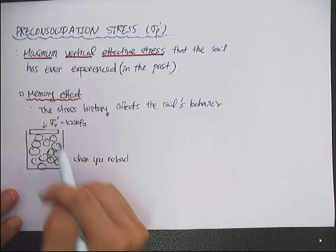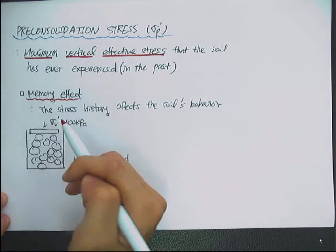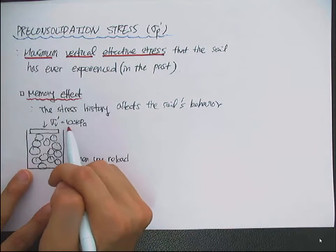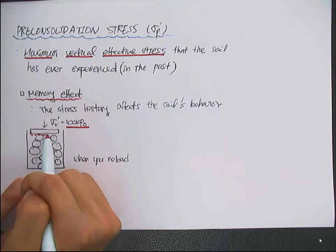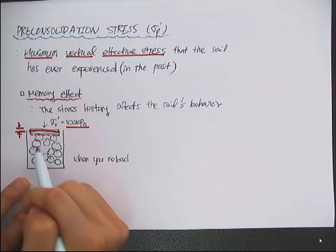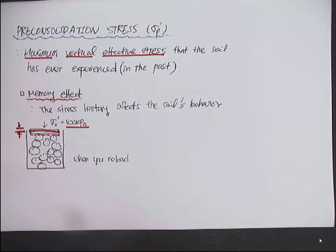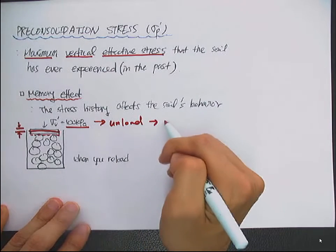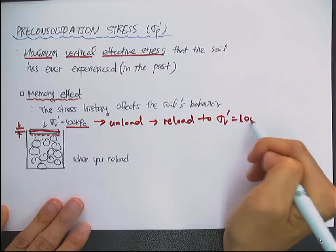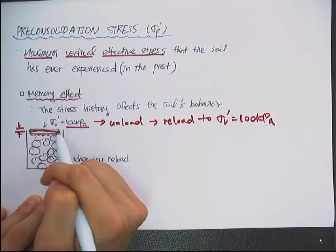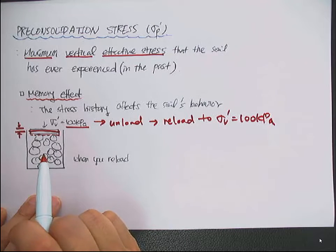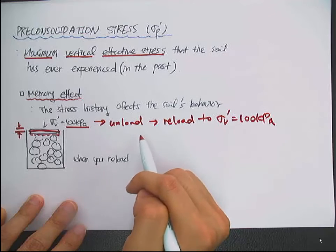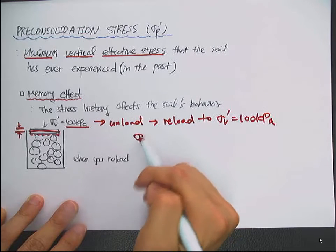For example, let's say we pour soil in a container — the soil has never experienced any stress. Then we apply a vertical effective stress of 100 kPa. The soil will settle and deform, and now the soil has experienced 100 kPa. You then unload it. When you reload to 100 kPa, the settlement will occur the same amount. In this case, the maximum vertical effective stress the soil has experienced — the pre-consolidation stress sigma p — is 100 kPa.